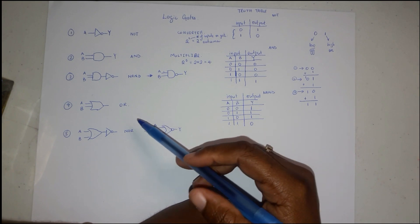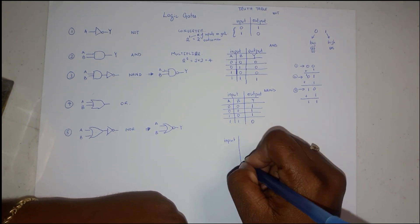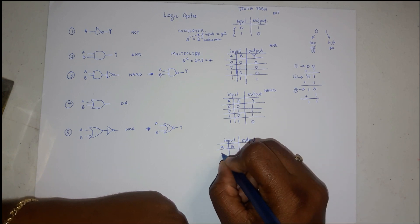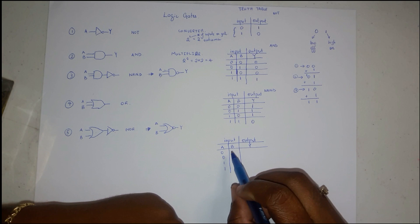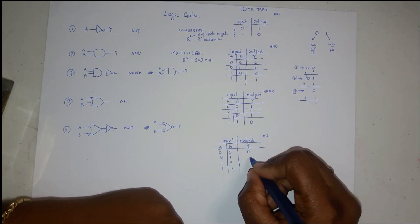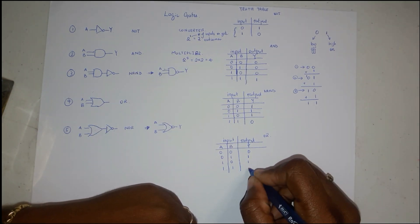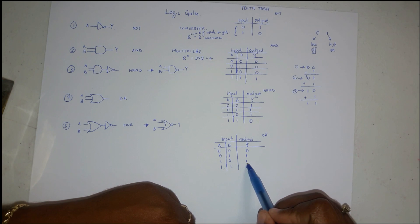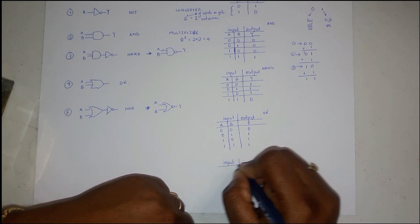For the OR gate I call it the addition gate. It works well like addition except when you reach 1+1. Inputs A and B, output Y — same four outcomes. Zero plus zero gives 0, zero plus one gives 1, one plus zero gives 1, and for one plus one we just treat it as 1. Alternatively: nothing from nothing gives nothing, something from nothing gives something, and something from something gives something.